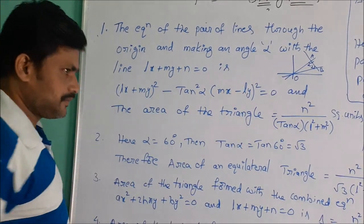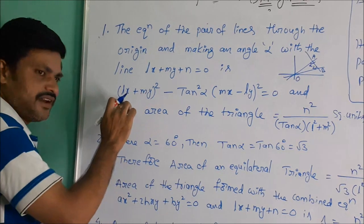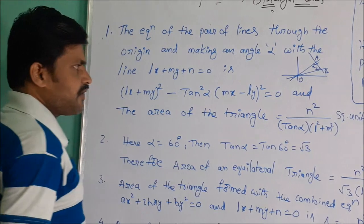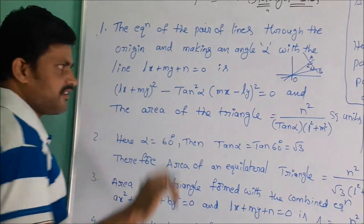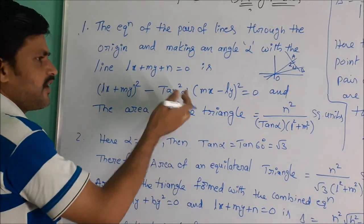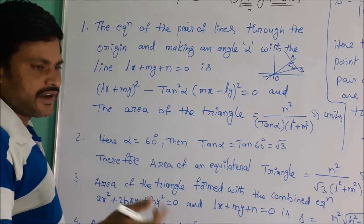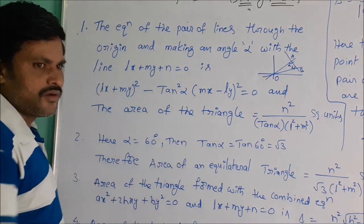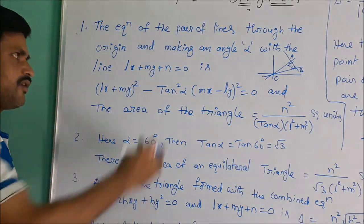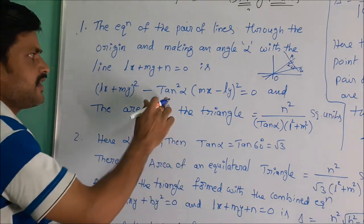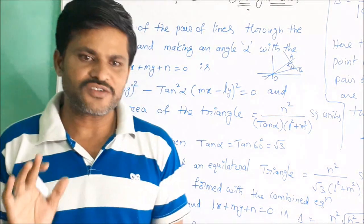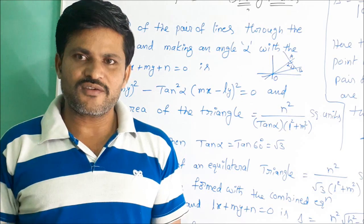In this equation, tan alpha is computed from the given angle alpha. For example, if alpha = 30°, then tan alpha = tan 30° = 1/√3, and tan²α = 1/3. So for any given angle alpha, find tan alpha and substitute into the combined equation formula to find the equation of pair of straight lines.